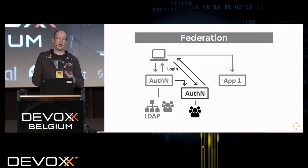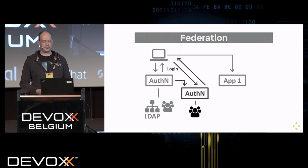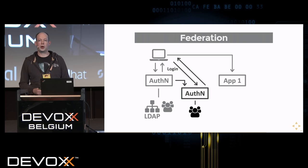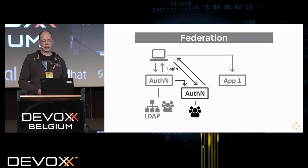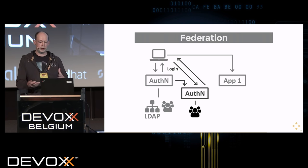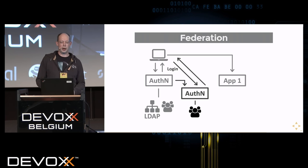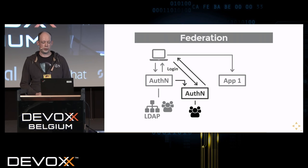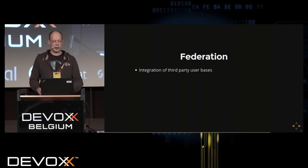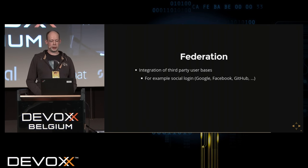It could also be the user base of Google or Facebook, where you want social login — if Google verified the identity of this user, you trust it and use it for your applications too. You incorporate an additional authentication server operated by the other organization so that your applications don't notice whether a user comes from your own user base or from a trusted third party.